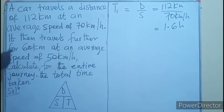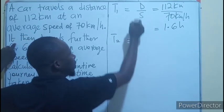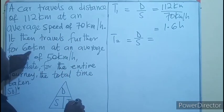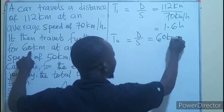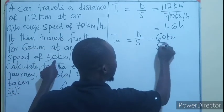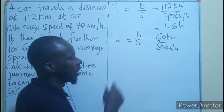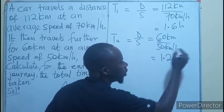Now let's see what will be the time for the second part of the journey, which will still be the distance over the speed. The distance is now 60 kilometers and the speed is 50 kilometers per hour. The kilometers will cancel and that will give us 1.2 hours.